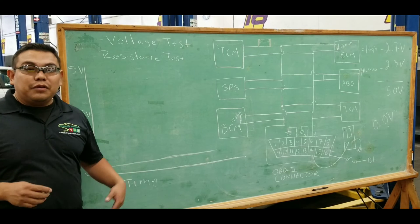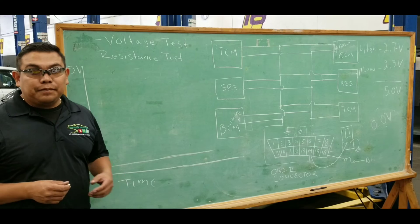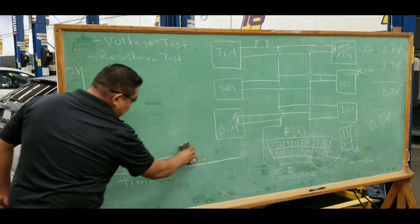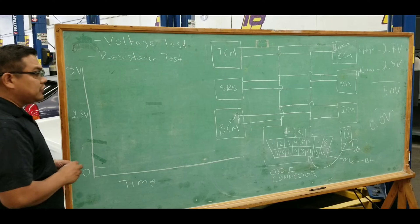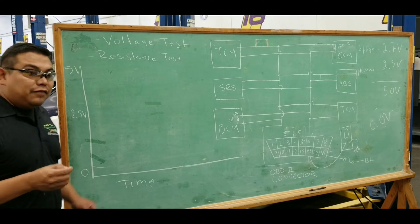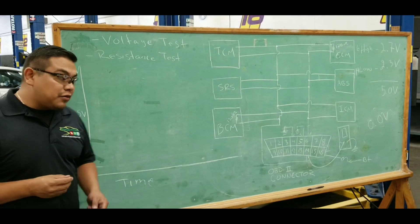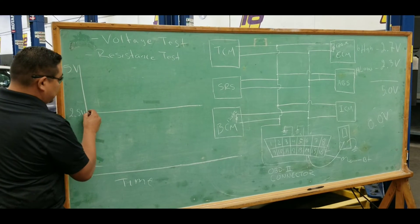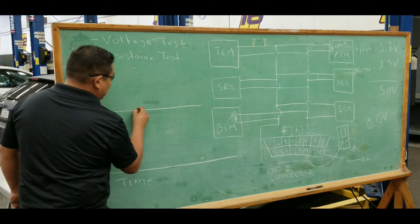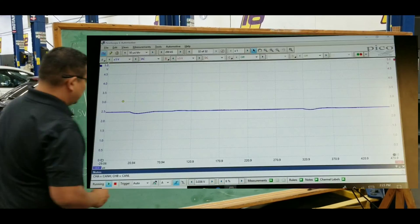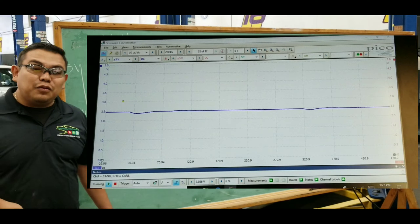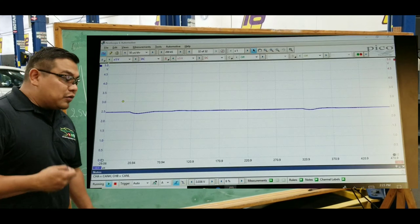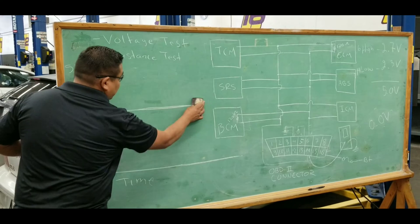You're going to see zero volts coming out of both the high side and the low side. Remember that the high side and the low side switch from 2.5 volts. If the two lines are shorted together, you're going to see two lines on your scope both indicating 2.5 volts.